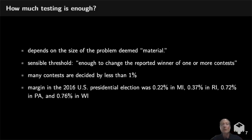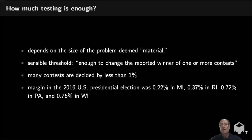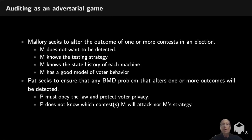How much testing do we really need to do? That depends on how big a problem would make a material difference. A sensible threshold for materiality is enough to change the reported winner of one or more contests - we'd like high confidence that whatever errors occurred, they didn't alter who won. Many contests in the U.S. are decided by less than one percent, even statewide. For example, in the 2016 presidential election, margins in Michigan, Rhode Island, Pennsylvania, and Wisconsin were all under one percent, with Michigan as low as 0.22 percent.